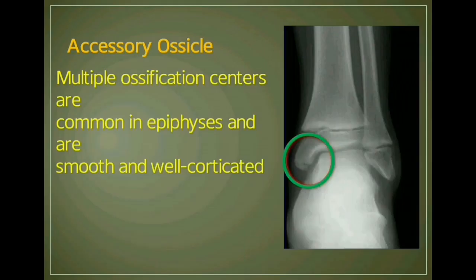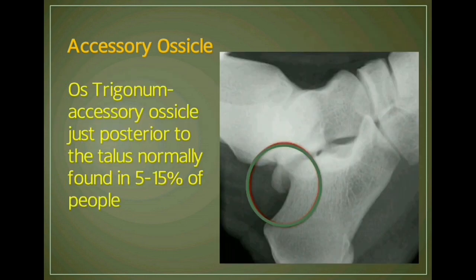Some fracture mimics have characteristic features. The first example is accessory ossicles. Multiple ossification centers are common in the epiphysis and are smooth and well corticated. Accessory ossicles are small bones considered normal but are not present in all individuals. They shouldn't be mistaken for fractures. A second example is os trigonum, which is posterior to the talus and normally found in 5 to 15% of people.